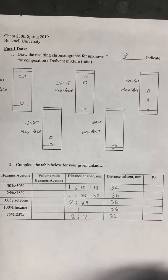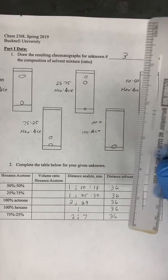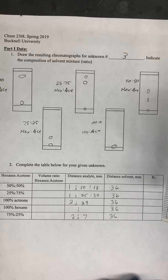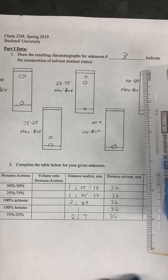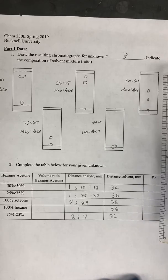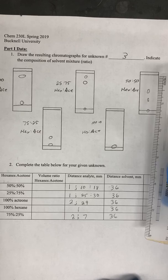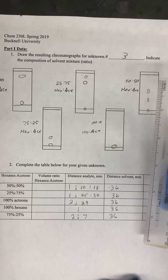And so then what you would do is take a ruler and measure the distance from the baseline that each of the spots moved up the TLC plate.